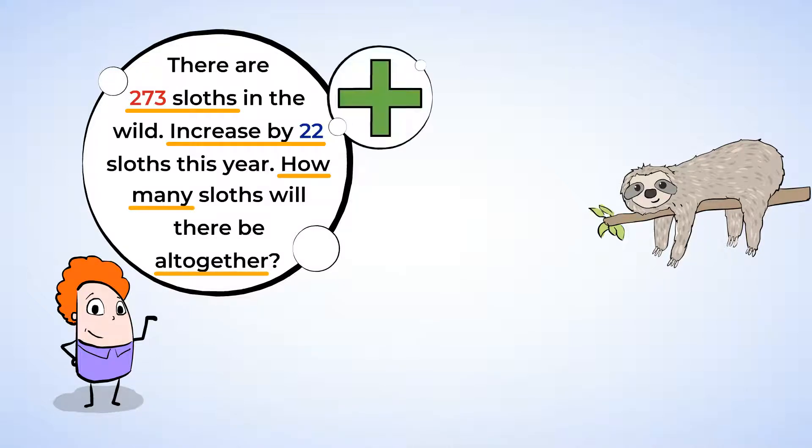This is an addition problem, so we can add 273 and 22. I know these are big numbers. But when we add bigger numbers, like numbers with hundreds, we start the exact same way as smaller numbers. We just line them up and take it one place at a time. So don't worry. If you can add 3 plus 2, then you can add 300 plus 200. We'll do it together.